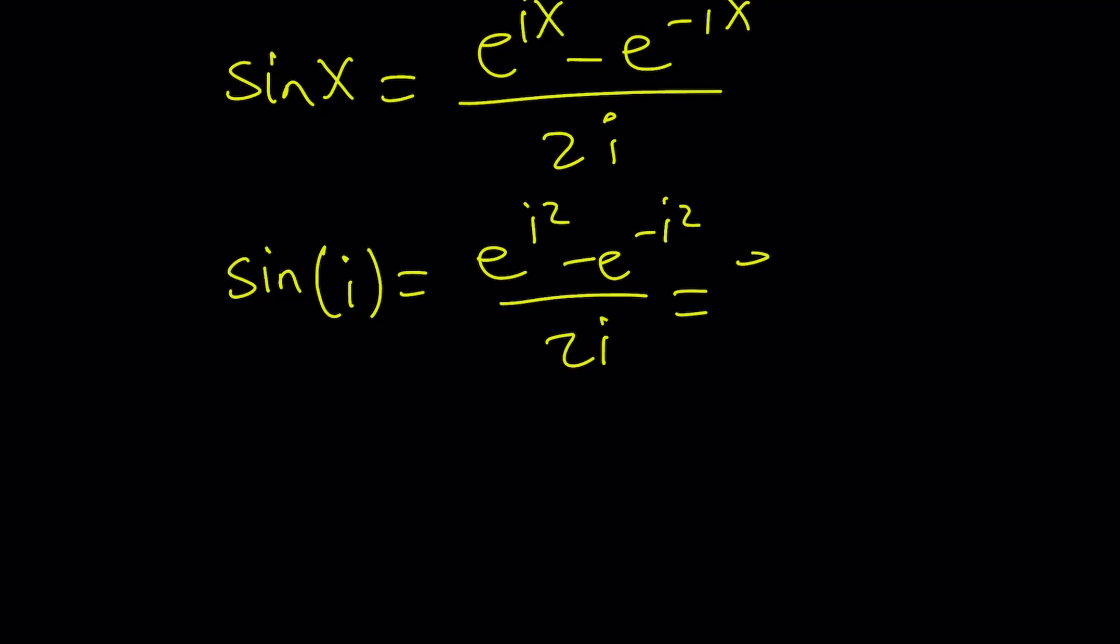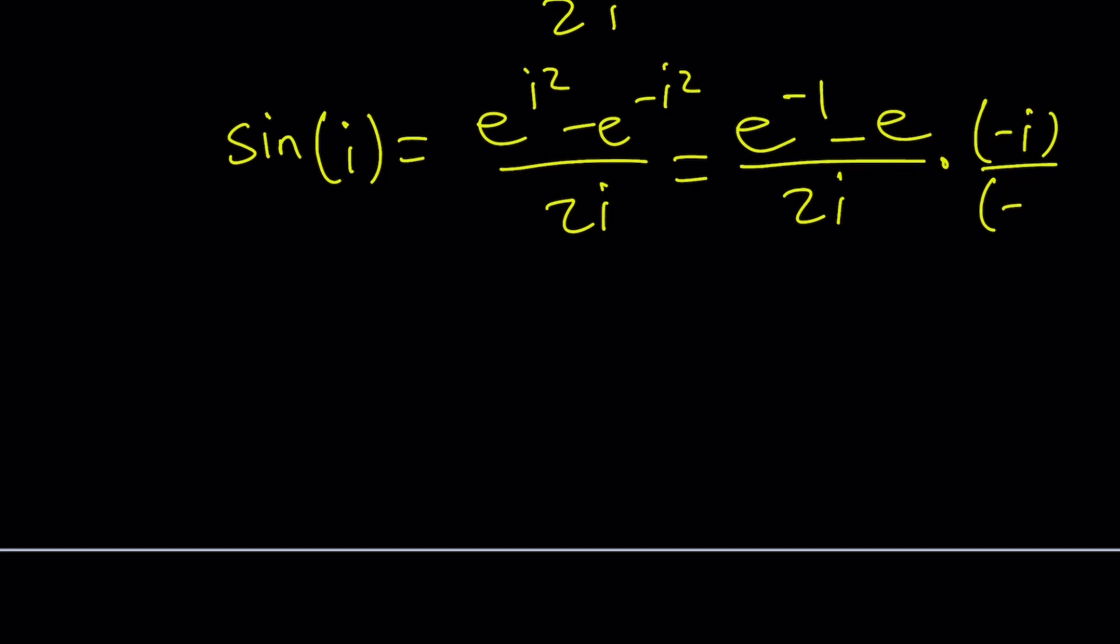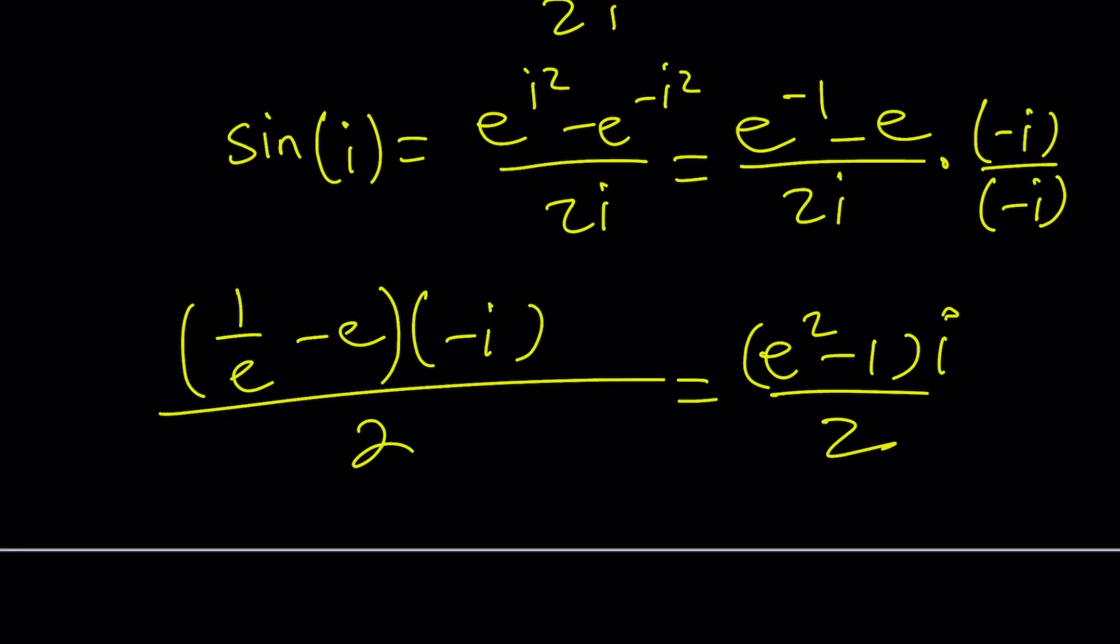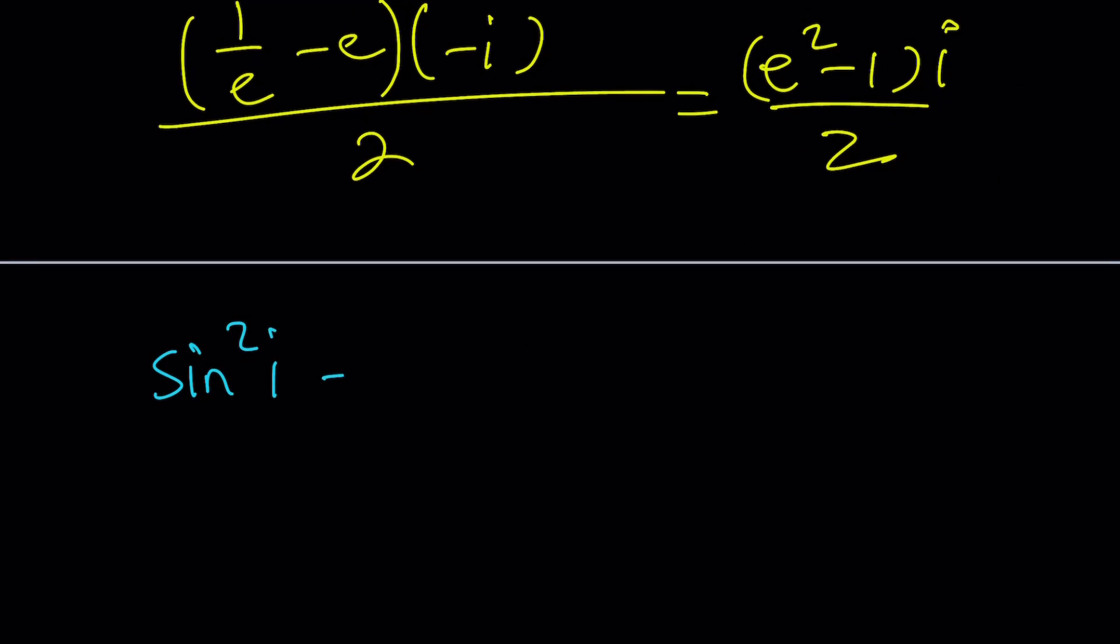Sine of i is gonna be e to the power i squared minus e to the power negative i squared over 2i. e to the power i squared is e to the power negative 1. This is e and 2i. And then we can obviously multiply by negative i to get rid of the i at the bottom. That gives us 1 over e minus e multiply by negative i divided by negative 2i squared, which is 2. And if you simplify this a little bit, we're gonna get 1 minus e squared i. And there's gonna be a negative sign, so it's gonna make it e squared minus 1 times i over 2. And that is gonna be the sine i. Now here's one thing that I'd like you to check. Do you think sine squared i plus cosine squared i is going to be 1? Is this true for complex values, too? But notice that sine i and cosine i, well, I shouldn't say for sine i. Cosine i is real. Sine i is not real. It's fake. Anyways,